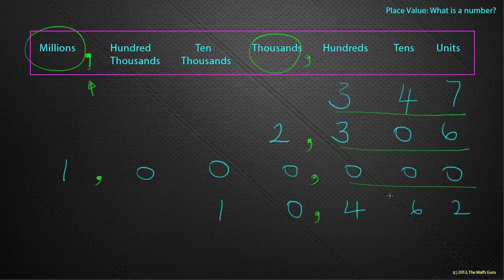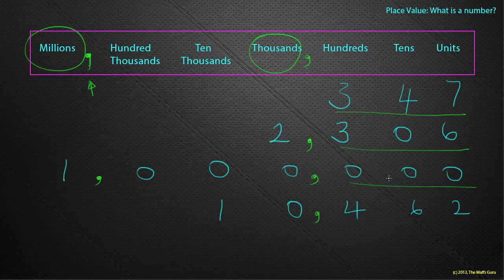But it's two thousand three hundred and six. What about this one here? Well, it's just zero. But it's part of a bigger number that says one million.